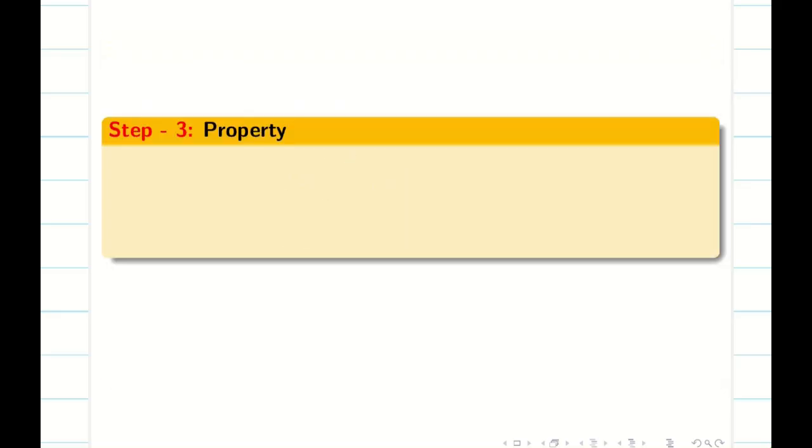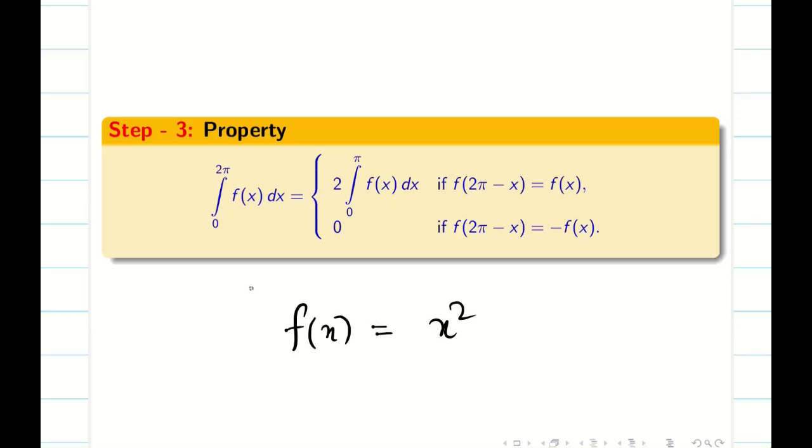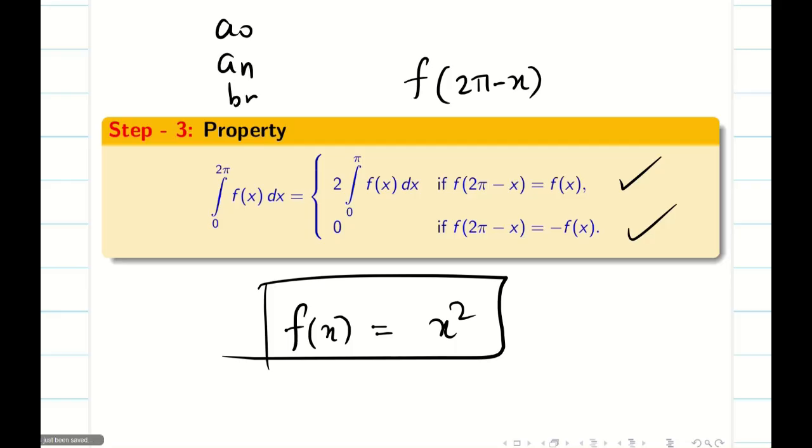Step 3: property. We know the property but now there is a doubt. See, this function given in the question, f of x equal to x square, it is easy, you can guess. The problem f of x equal to x square does not involve any π, so I cannot apply the property because it will be neither f of x nor minus f of x when you replace x by 2π minus x. So if you choose this kind of problem, we have to solve a naught, a n, b n everything for the problem.